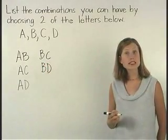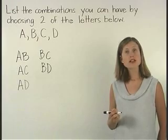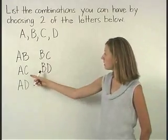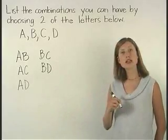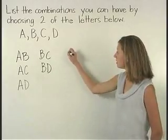Now let's list the combinations that begin with C. CA is the same as AC and CB is the same as BC, so we simply have CD.